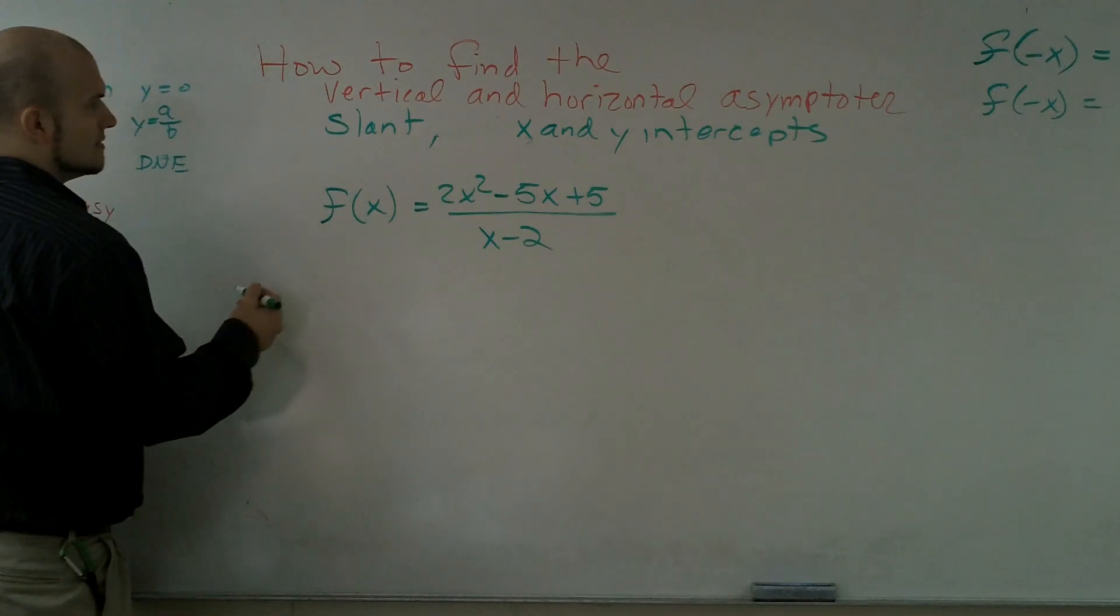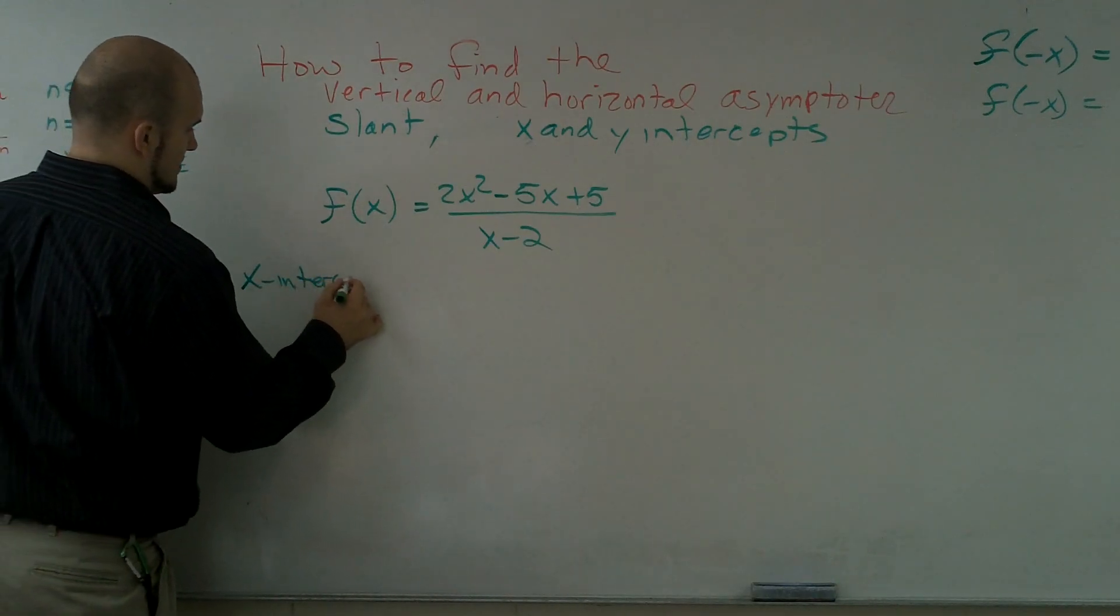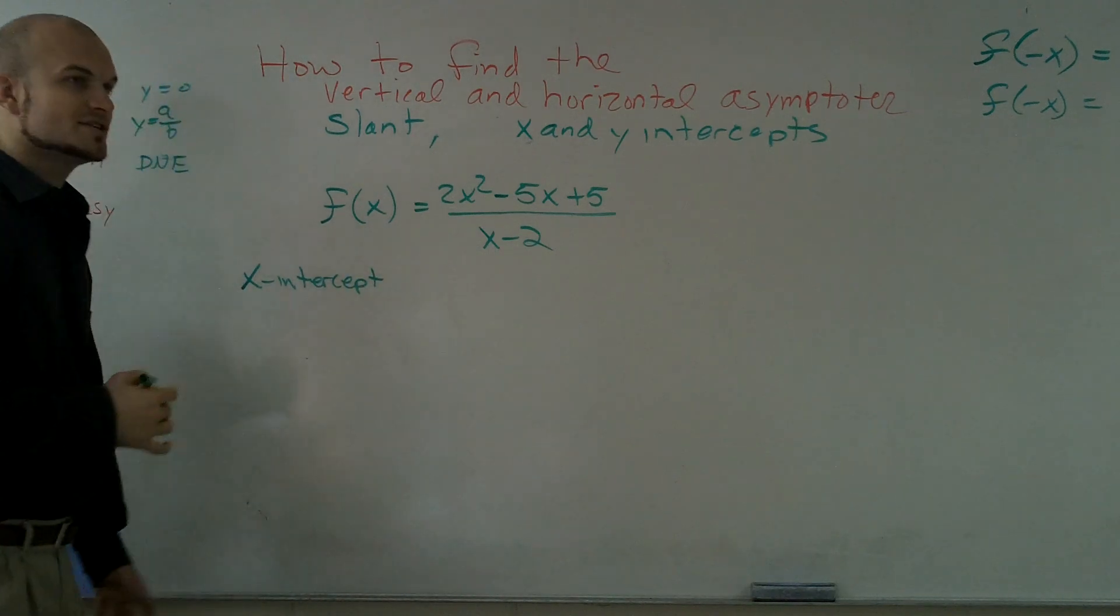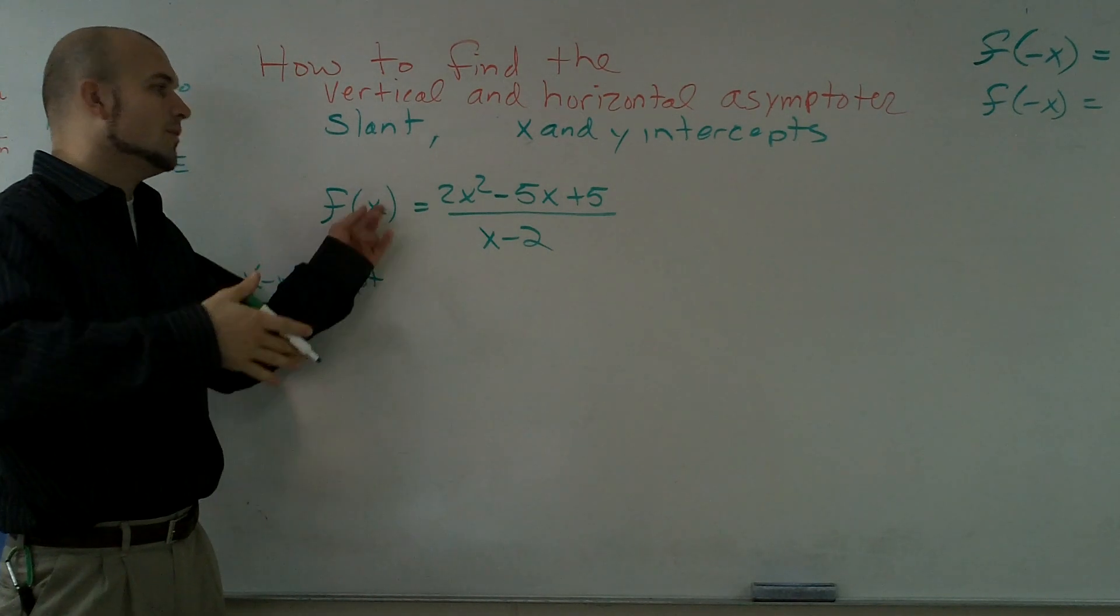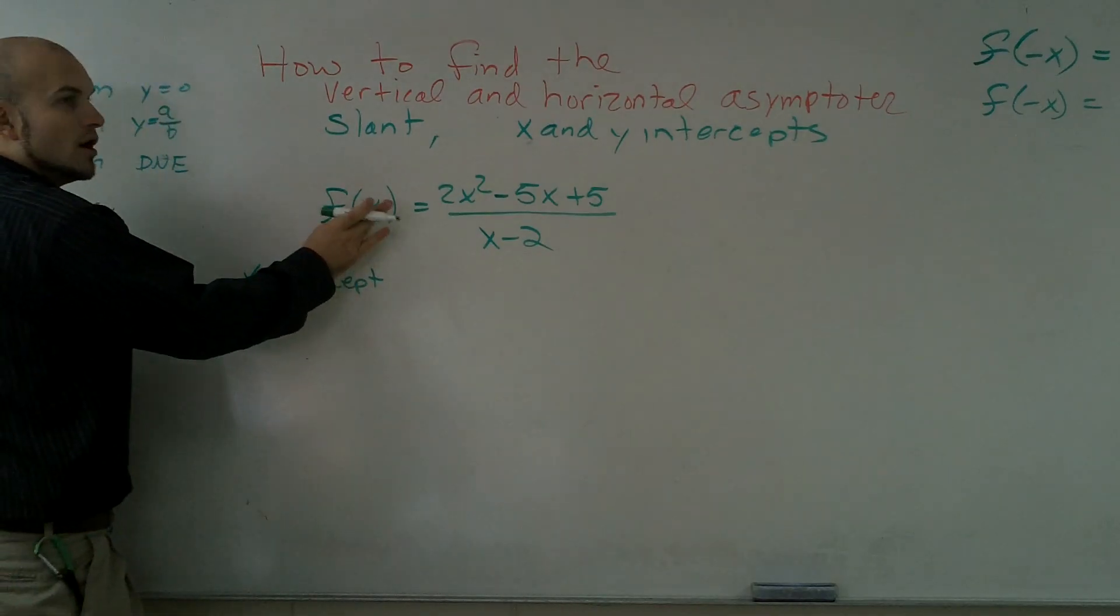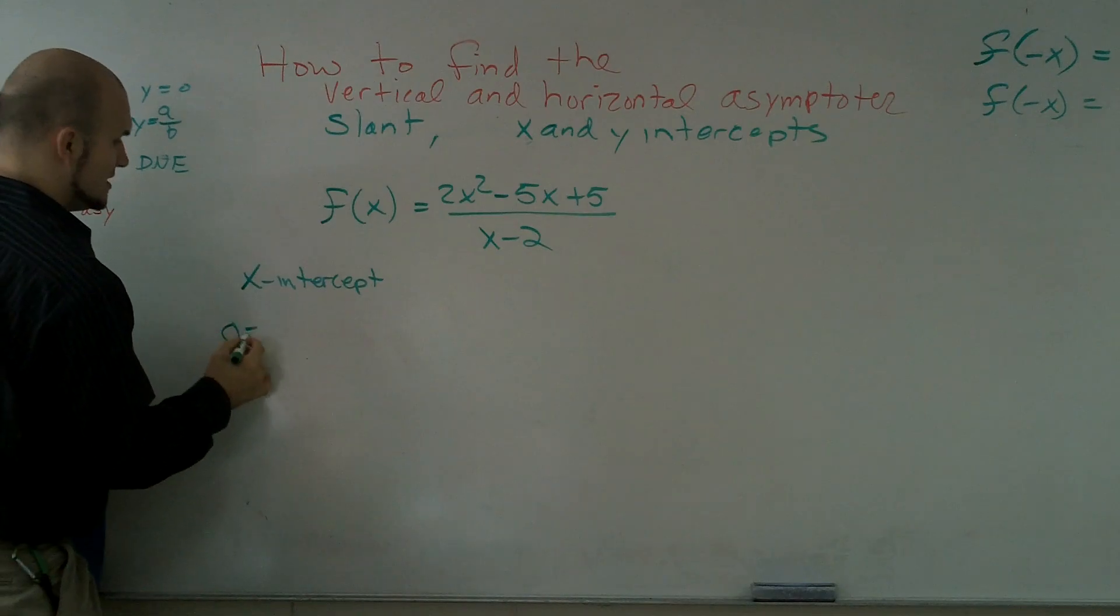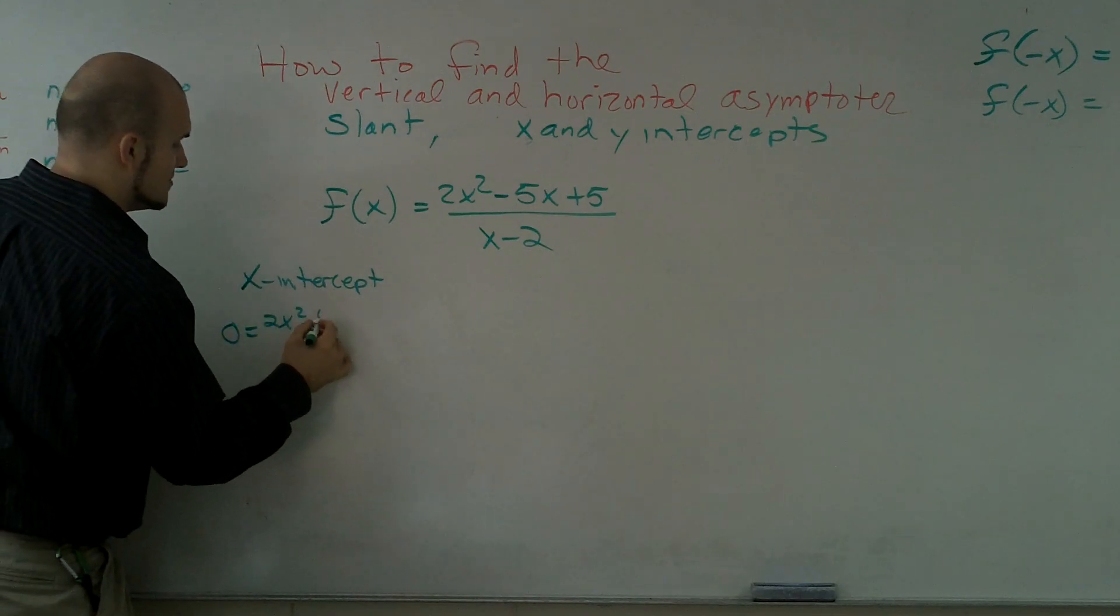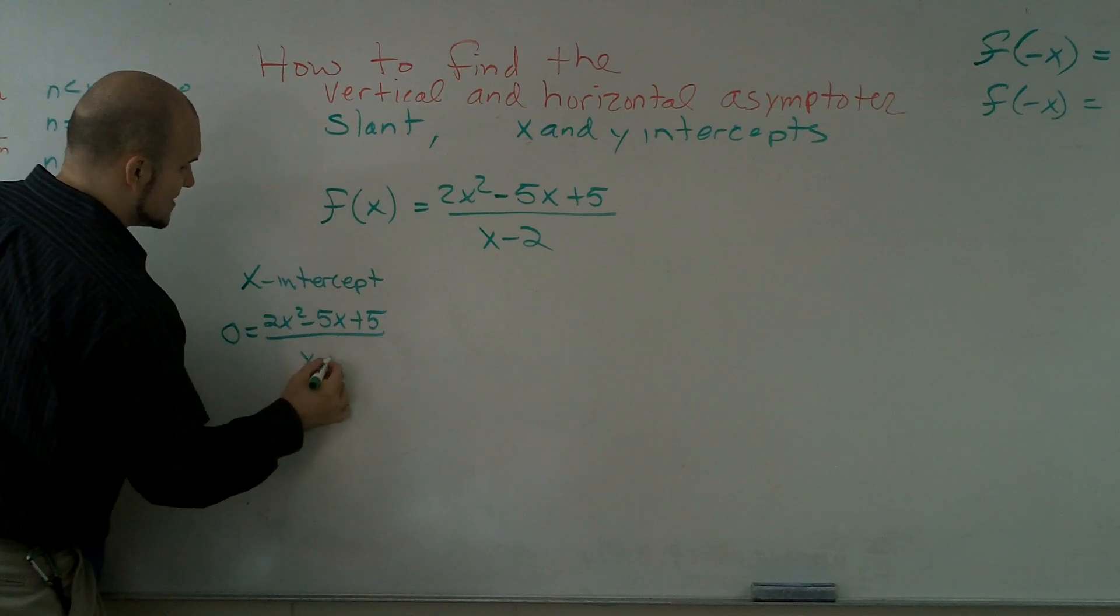First thing I'm going to say is find the x intercept. To find the x intercept, one thing you know is at the x intercept we have y equals 0. So therefore our function is going to be 0.